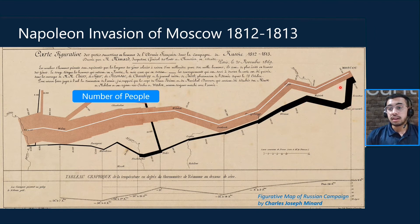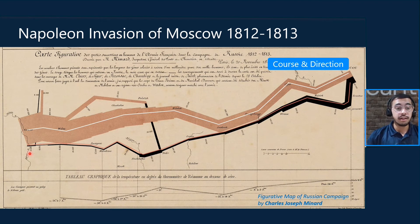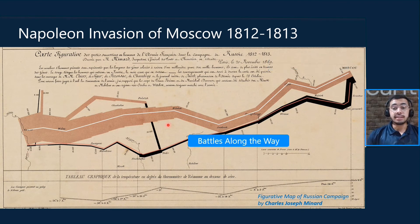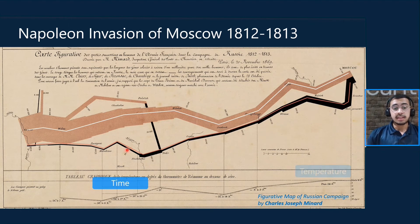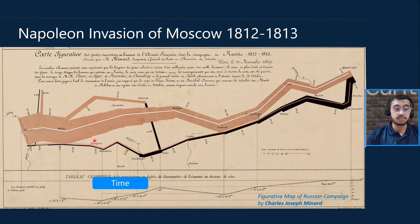When they reached Moscow, they were 100,000 people, and when they returned back to Kono, there were only 10,000 people. The graph also tells about the course, direction, and all the battles they fought along the way. It represents the temperature at every point — at every point when temperatures were extreme, they lost a massive number of people. It also tells about the time — at what time the army was at each location. So many things can be represented in one single graph, and this is what data analytics does.